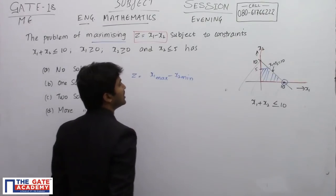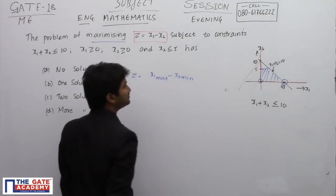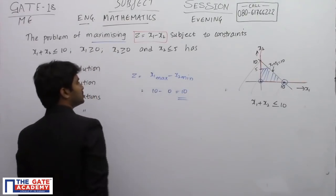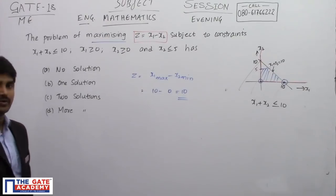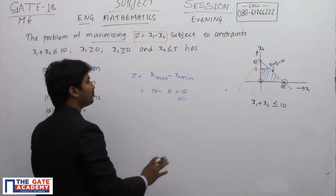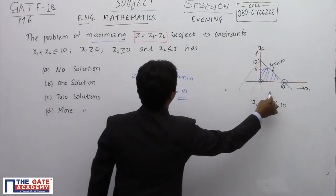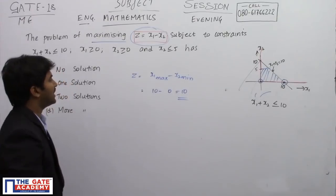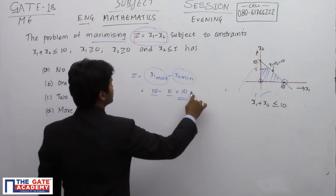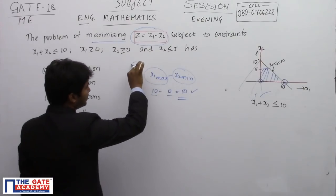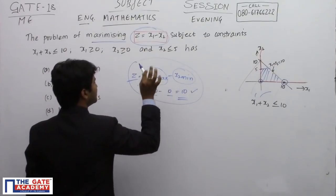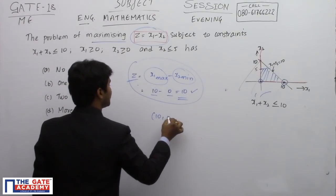The value of x2 is minimum at 0, and the maximum value of x1 is 10. So x1 maximum is 10 and x2 minimum is 0. The maximum value of z is therefore x1 minus x2, which equals 10 minus 0, equal to 10. There is no other combination of x1 and x2 satisfying all constraints that gives a higher value.